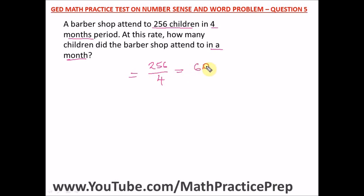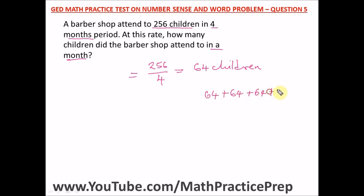256 divided by 4 gives us 64 children. To verify: 64 plus 64 plus 64 plus 64 — that's the four-month period — adds up to 256, confirming our answer is correct. The barber shop attended to 64 children in one month.